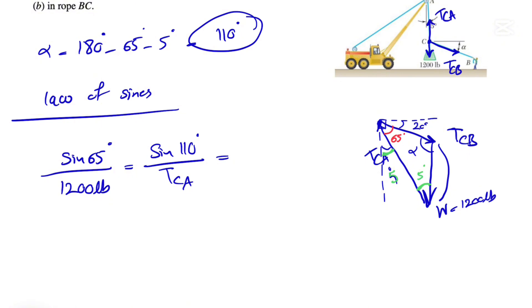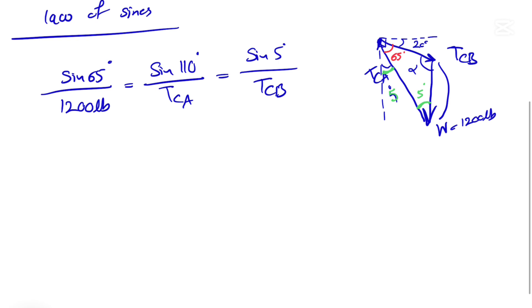We have TCA or TAC in front of it, and the last one is the sine of 5 degrees, and that would be TCB. So we should be able to find both of our unknowns here.